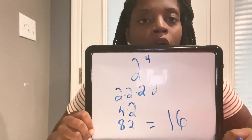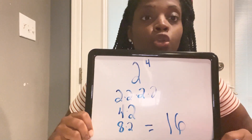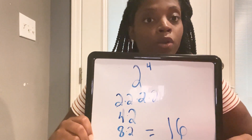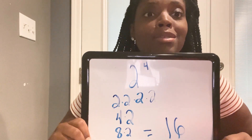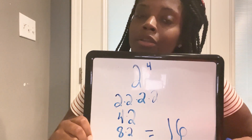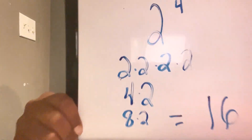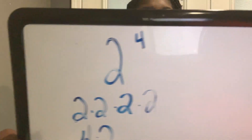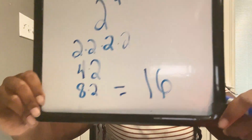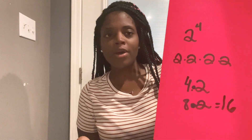Two to the fourth power — write it out like this: 2 times 2 is 4, that uses two of the 2's. Then 4 times 2 is 8, that's the third 2. Then 8 times 2 is 16, that's the fourth 2. So the answer is 16. It's not hard, you guys. We're going to pass this the first time.